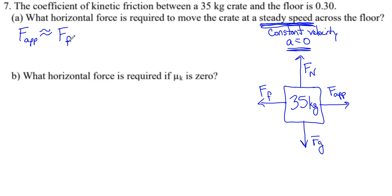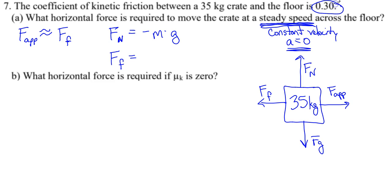So all we need to do is figure out the normal force using our equation: negative mass times our acceleration due to gravity. Once we find that normal force, we can figure out the force of friction by taking our coefficient of friction, which is 0.30, times that normal force. Once we get the force of friction, we know that that's the force required to move the crate.